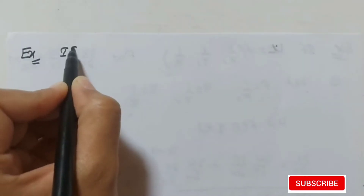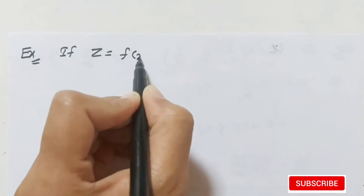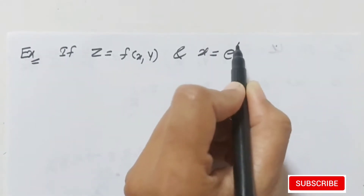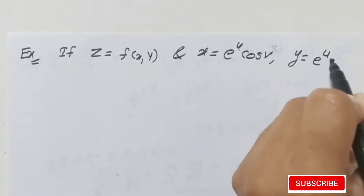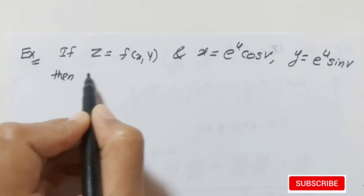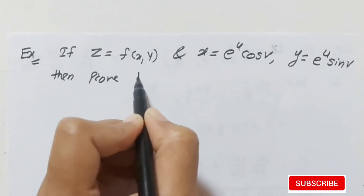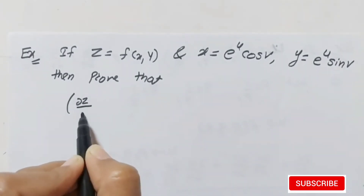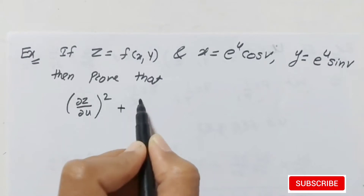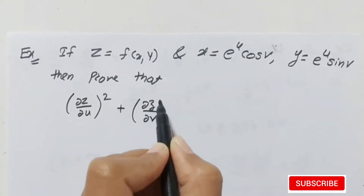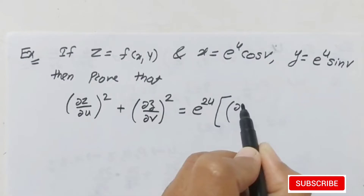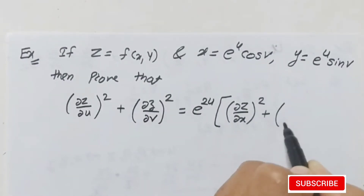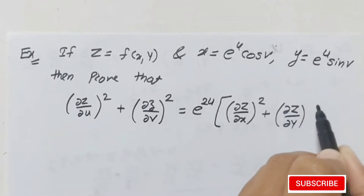See the next example. If z equals f(x, y), and x equals e^u·cos(v), y equals e^u·sin(v), then prove that (∂z/∂u)² + (∂z/∂v)² equals e^(2u) times [(∂z/∂x)² + (∂z/∂y)²].